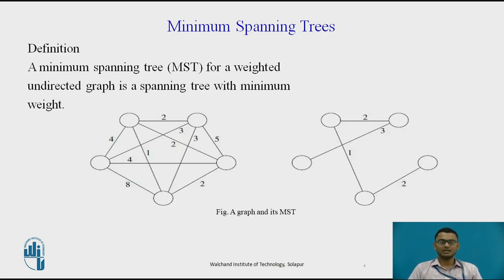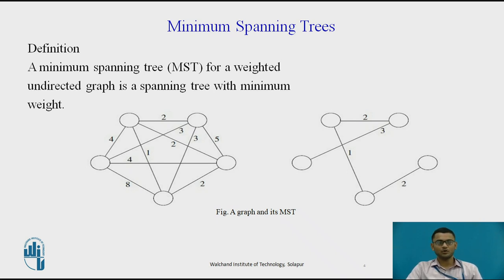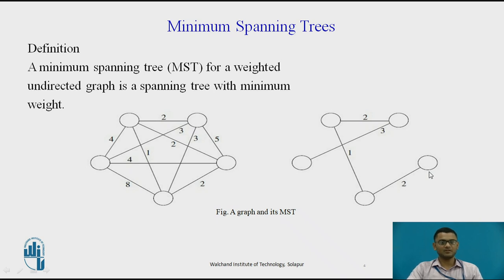So what is a minimum spanning tree? As we saw earlier, a minimum spanning tree for a weighted undirected graph is a spanning tree with minimum weight. For this given graph on the left side, you can see an undirected graph having weighted edges. If we find a minimum spanning tree — a tree connected to all the nodes having minimum weights — we find the minimum spanning tree of the graph.